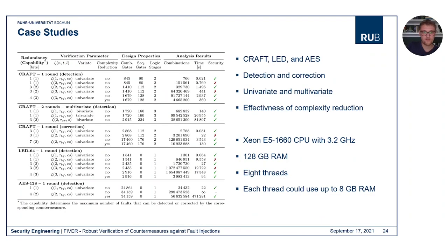We performed case studies for CRAFT, LED, and AES, considering detection and correction countermeasures based on linear error correcting codes, with univariate and multivariate fault models. We showed that the complexity reduction optimization is effective. All experiments were done on a Xeon E5 CPU at 3.2 GHz, equipped with 128 GB of RAM, using 8 threads with up to 8 GB of RAM each.